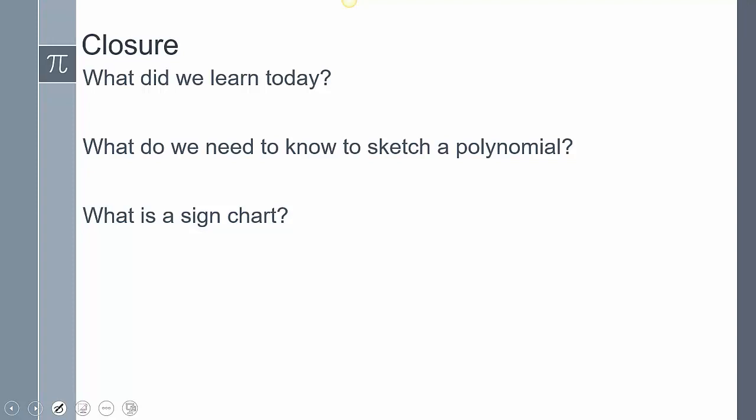Let's close today's lesson. What did we learn today? We created a polynomial from a graph. Now, as a recap, what do we need to know to sketch a polynomial? Remember, y-intercept, the zeros with its respected multiplicity, and the end behavior. And then a sign chart is a mapping where the polynomial is above the x-axis and below the x-axis. This does conclude our lesson. If you have any other questions, please leave them in the comments. Thank you.